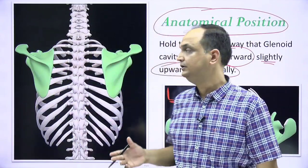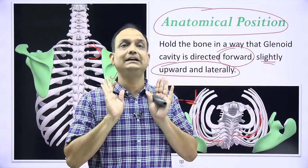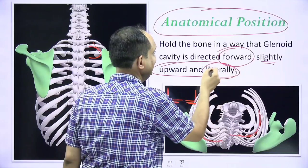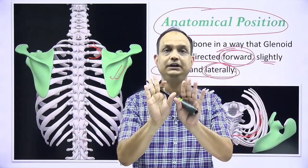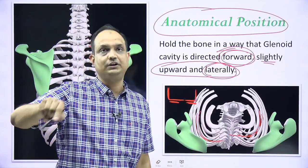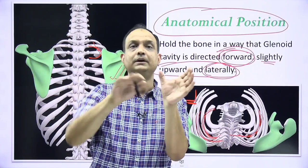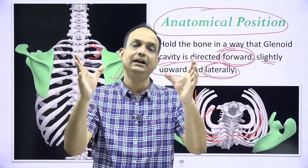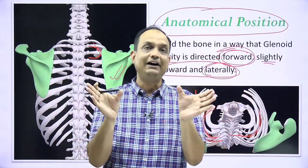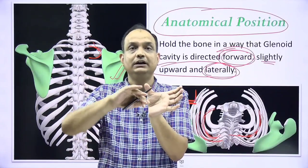But the curvature of the rib is actually followed by the bone, so it is not exactly posteriorly placed — it follows the curvature of the rib, and the glenoid cavity comes laterally and forward. So for anatomical position, you have to keep the scapula facing forward and laterally. You cannot hold it vertically because it is following the curvature of the ribs. So two things: side determination, and then anatomical position.